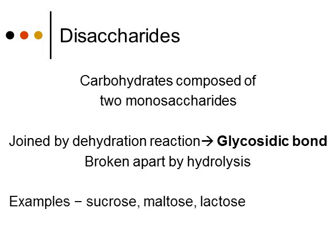Examples of disaccharides include sucrose, which is table sugar; maltose, which is a sugar we use to make alcoholic beverages; and lactose, which is a milk sugar.